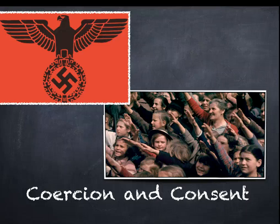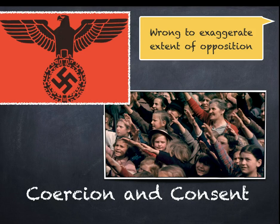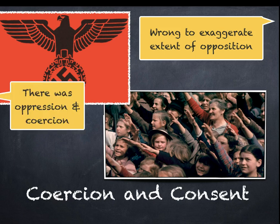Coercion and consent. In this lesson, we're going to look at methods of control that were used by the Nazi Party, things such as the Gestapo, the secret police, and also certain groups that actually supported Hitler and the Nazi Party. Certainly, there was not widespread opposition. It would be wrong to exaggerate and paint a picture that the vast majority of Germans were kept in line by fear. There was also popular support, but it's undeniable there was oppression and coercion.